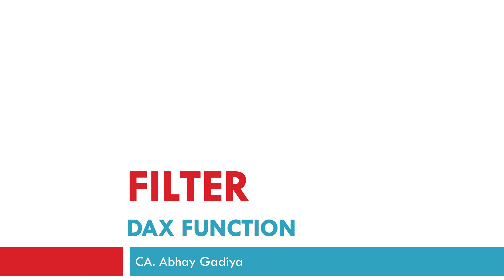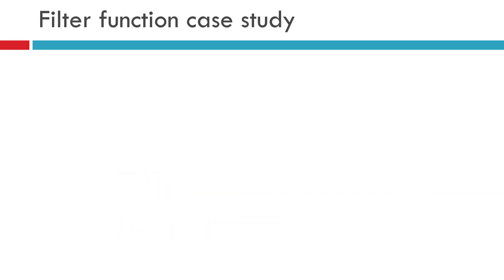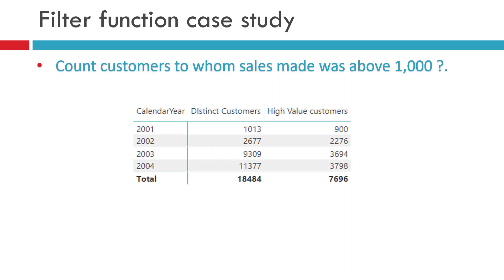In this video, we will look at one case study where the calculate function will need to take help of the filter function. Here is the question we need to answer based on the dataset inside our data models: we need to count the number of customers to whom the sales were made above $1000. This is a straightforward and relevant question — all businesses are keen to understand who their high value customers are. We need to get an output showing for each calendar year the distinct count of customers and how many are high value customers where sales was made above $1000.